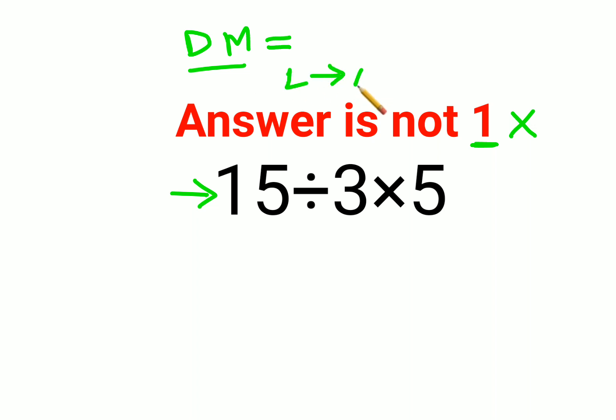That means the operation which comes first on your left will be done first, and then the next operation will be done. So we'll first do 15 divided by 3, that is 5, into 5. The answer comes out to be 25.